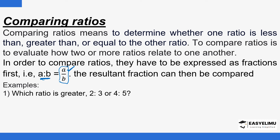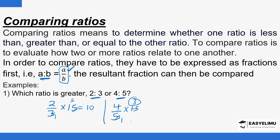For our first example, we want to compare two ratios — which one is greater, equal, or less than the other. The first ratio is 2 over 3 and the second is 4 over 5. To compare these fractions and see which is greater, we multiply both by the LCM, which is 15. The first: 15 divided by 3 is 5, and 5 times 2 is 10. The second: 15 divided by 5 is 3, and 3 times 4 is 20.